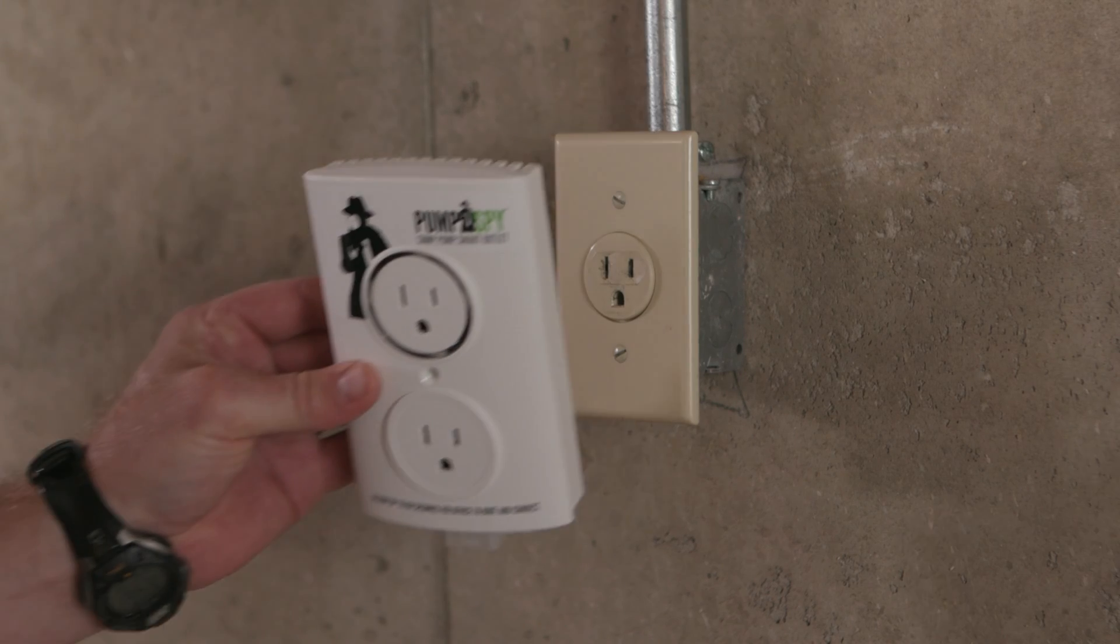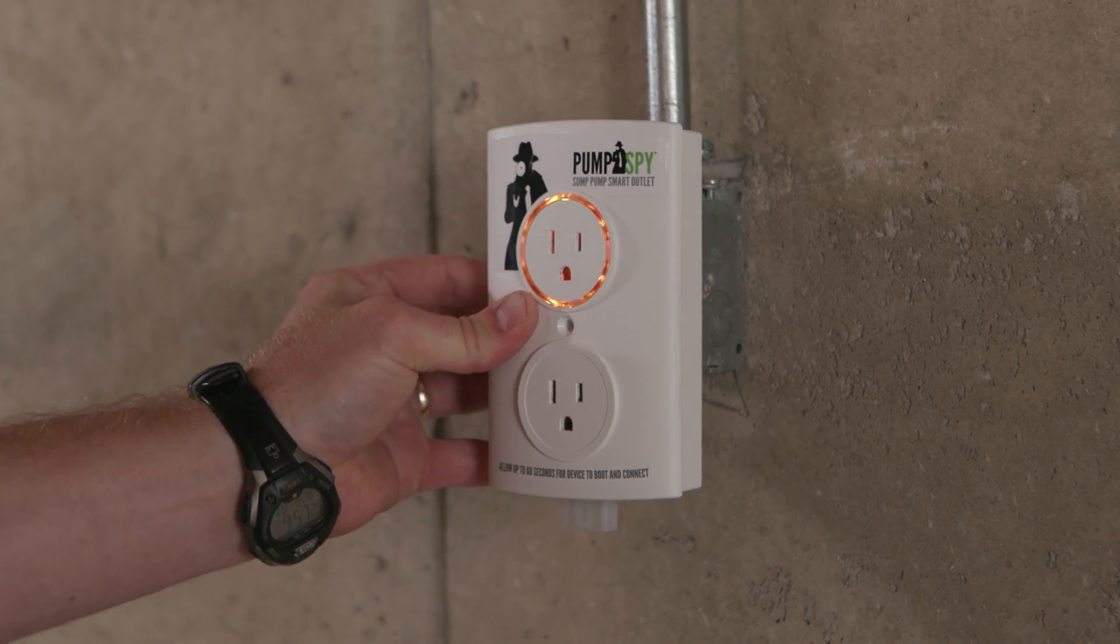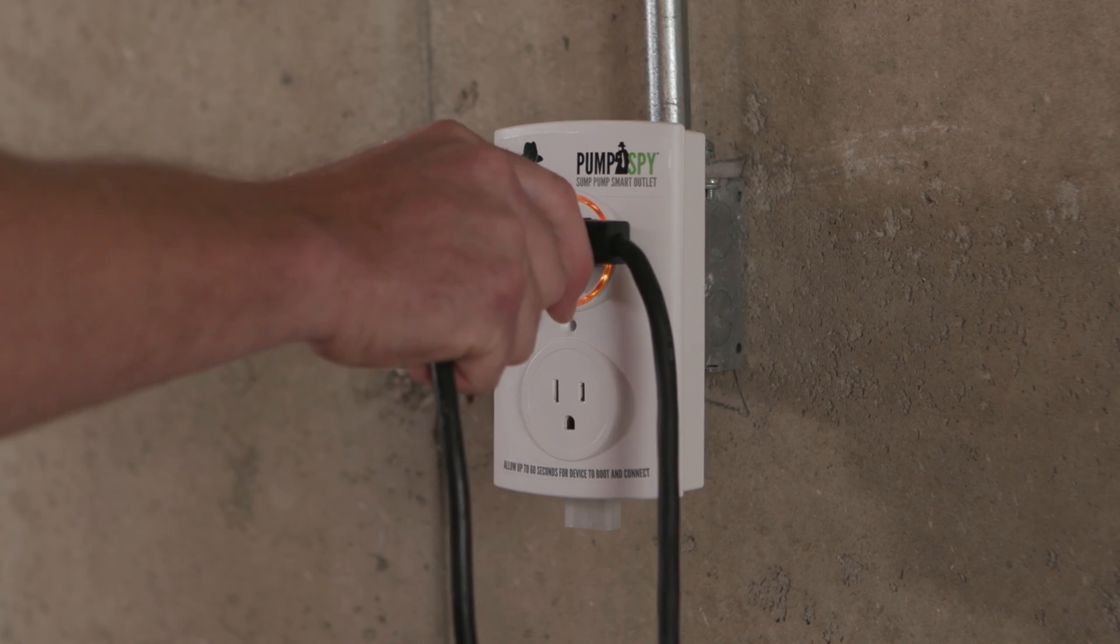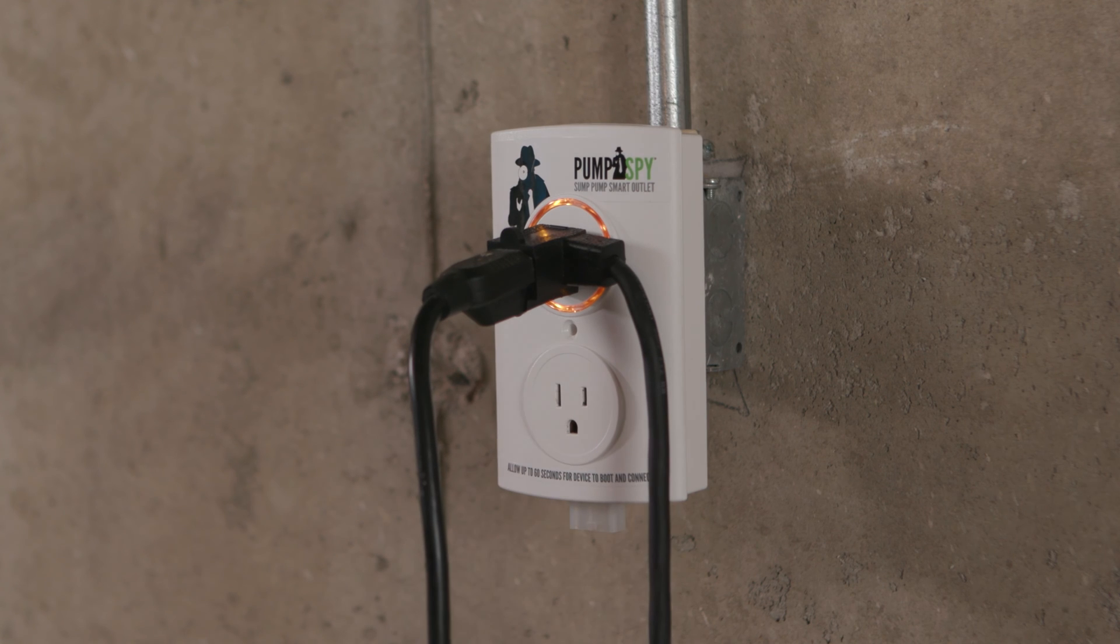Plug the included PumpSpy smart outlet into AC power. Then, plug the smart pump power cord and float switch into the top receptacle of the smart outlet.